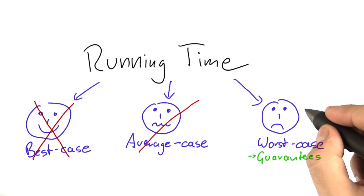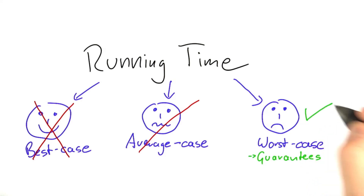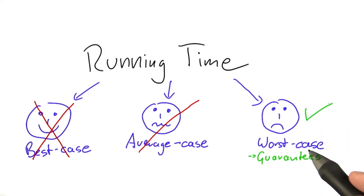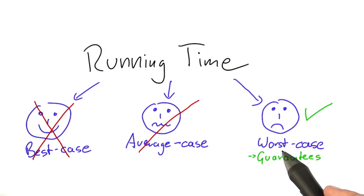So we are going to use worst case analysis, meaning we're always going to state the time of our algorithm for the worst possible input.